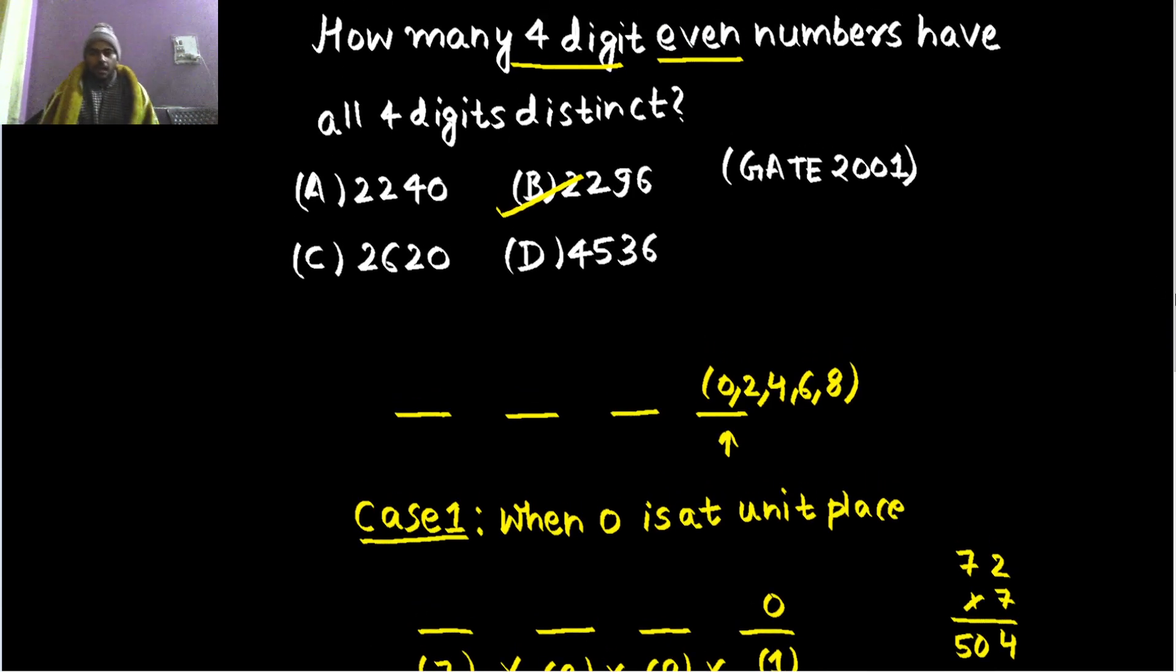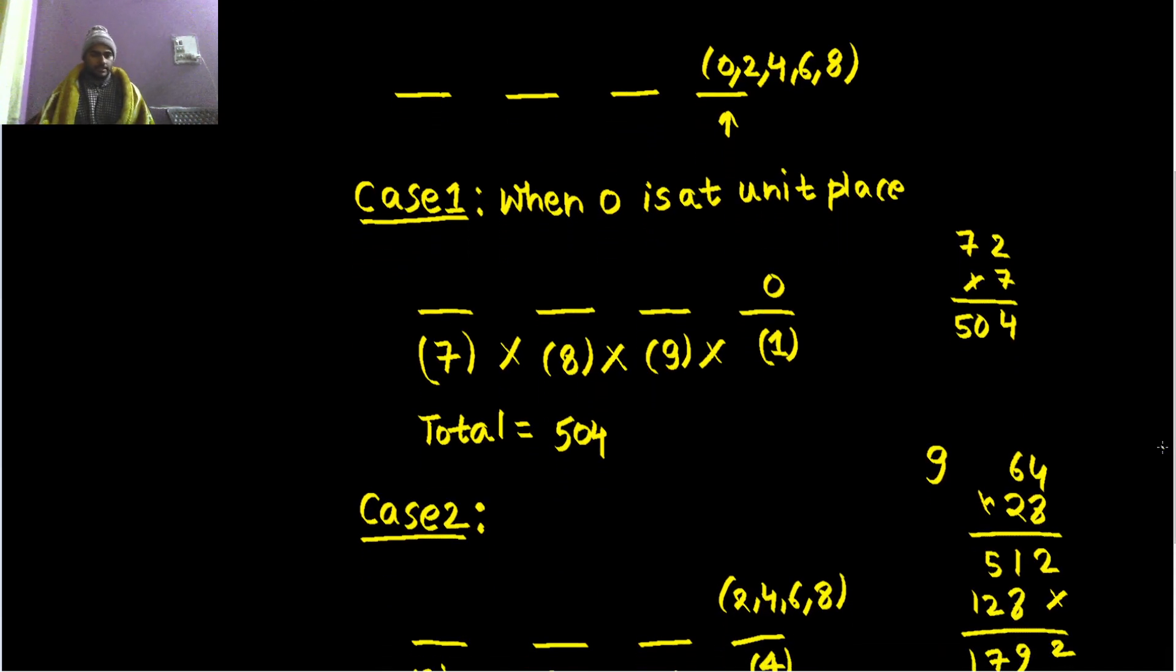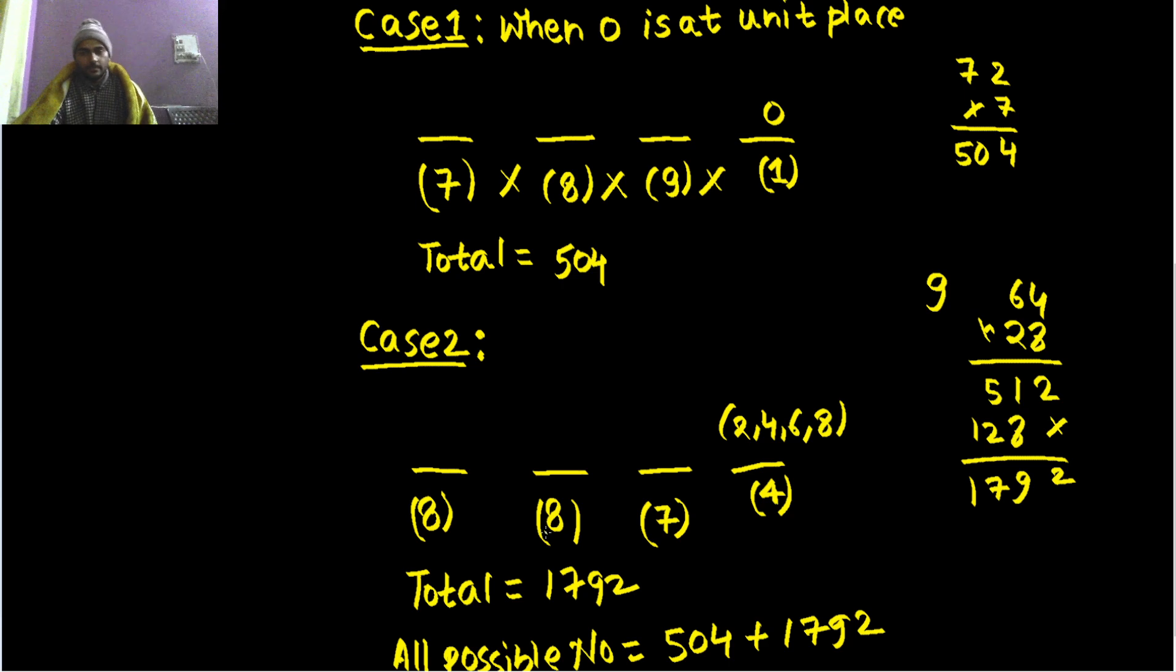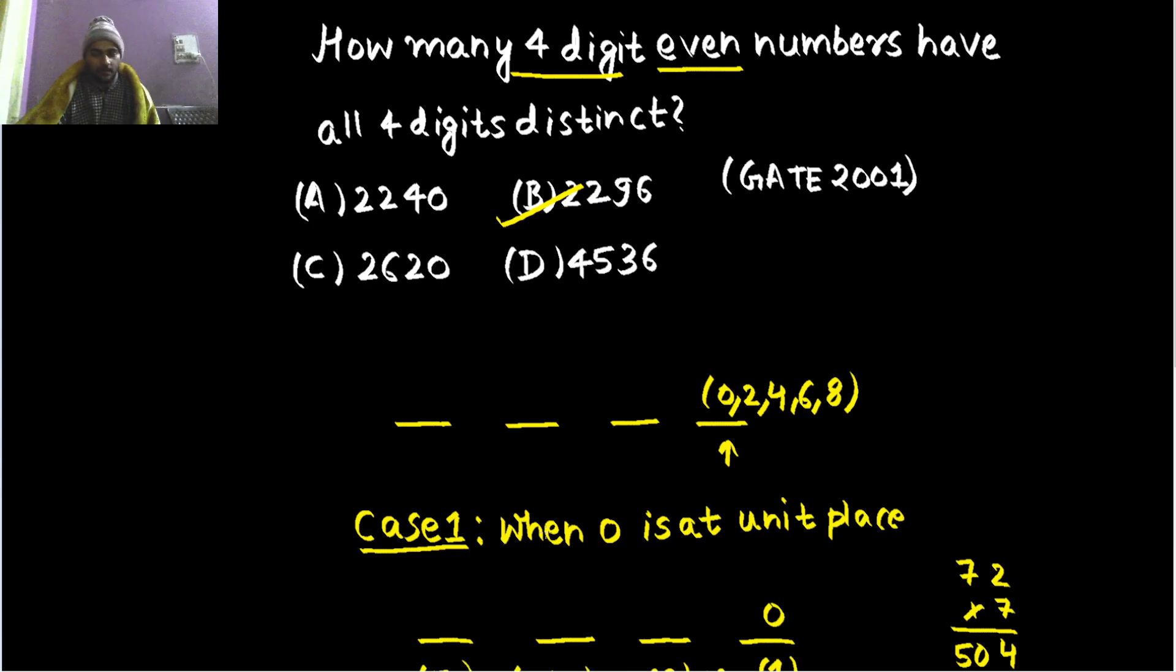So you saw how we made 2 cases just because we had 2 restrictions in this case. First restriction was that you need an even number, that means 0, 2, 4, 6, 8 can be there. And other restriction was it's a 4 digit number. And because it's a 4 digit number, you can't place 0 at the left most place. So we had to make 2 cases and finally add those 2 cases. So I hope you understood at least something. If not, please do comment. I will try to improve my teaching. So that's it for today. We'll see you with more such problems. Thanks for the day.